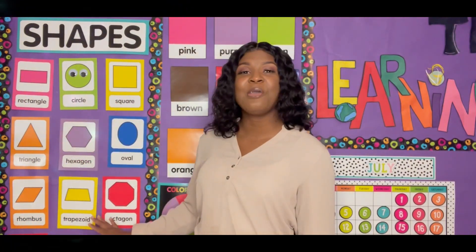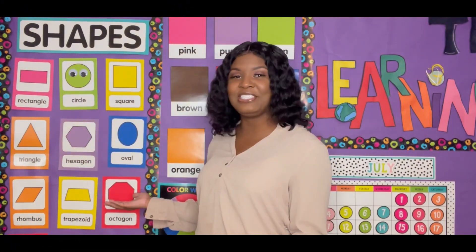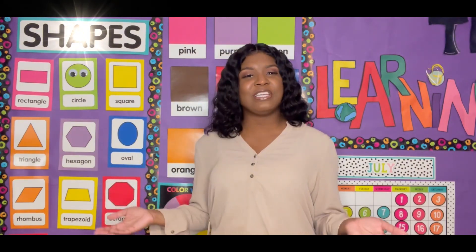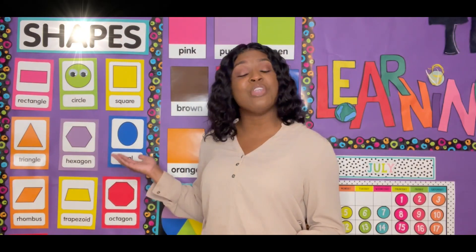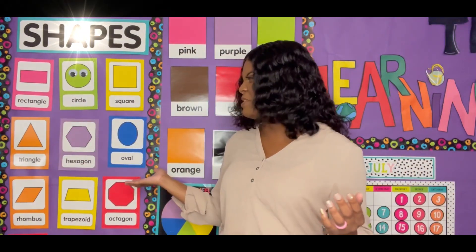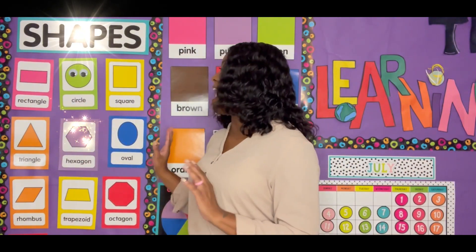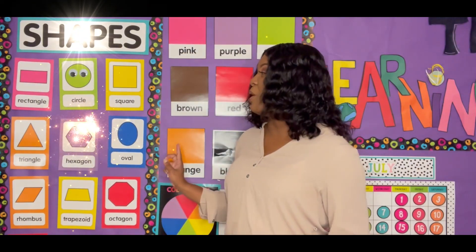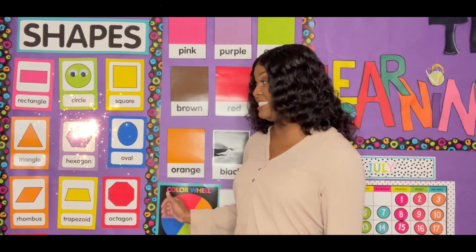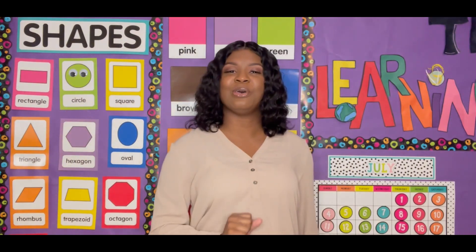Here you see we have a ton of shapes in our shape family and we're going to learn about each one of them over the next few weeks. What is something you notice about the shapes? Think about it for a second. Use your thinking brain and tell Ms. Blair, what is something that you notice about the shapes? I notice that the shapes are different colors and they're different sizes, but I also notice that the shapes have different names.